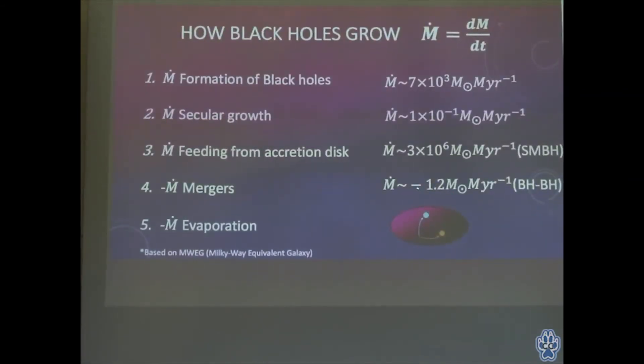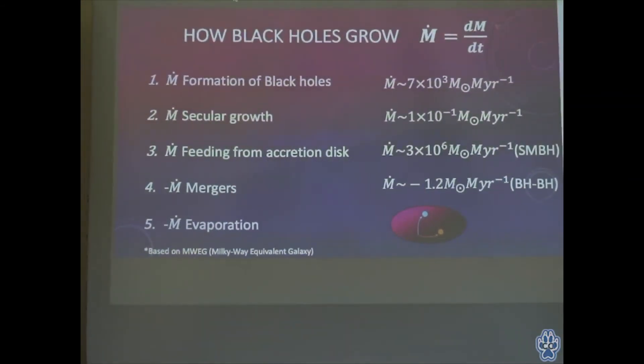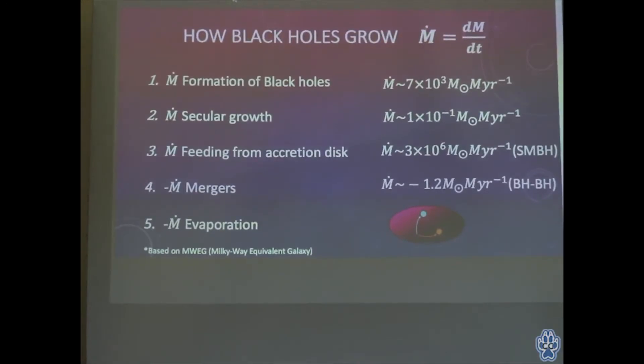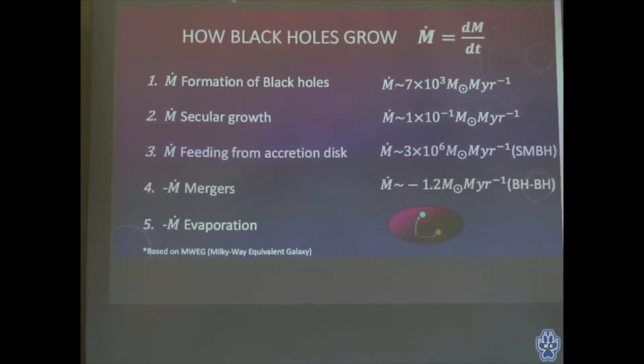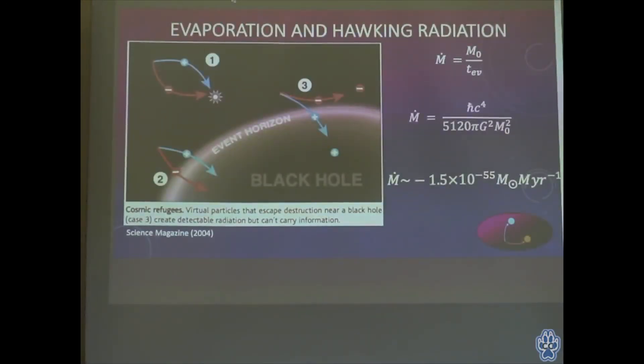If we take into account the merger rate, which is about two black hole mergers in our galaxy every one million years, there's a loss of about 1.2 solar masses per million years due to black hole mergers.